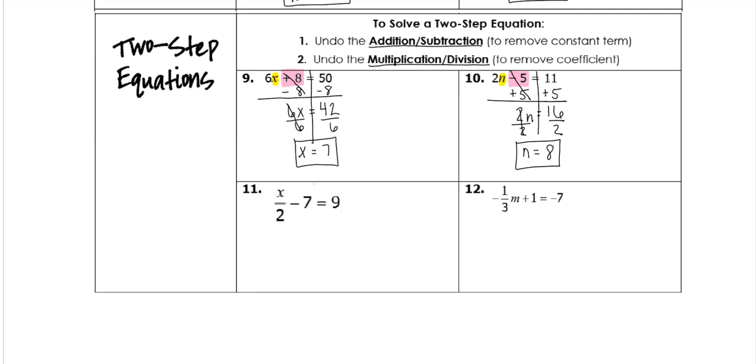On our next one, my variable is here. So look for the addition or subtraction first. We have subtraction. So we need to undo that minus 7. So we're going to add 7 to both sides. Negative 7 plus 7 will cancel and give me 0. So we're just left with x divided by 2 on the left. And then 9 plus 7 is 16.